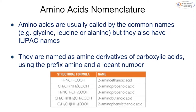Amino acids are usually called by their common names like glycine, leucine, or alanine, and you may come across these most likely in biology. But like any other molecule they do have IUPAC names — they're named as amine derivatives of carboxylic acids, and we use the prefix amino and specify where the amino group is. An example could be 2-amino-ethanoic acid or 3-amino-propanoic acid. Give it a try to see if you can draw some of these out.